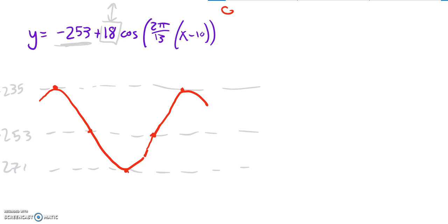So my cosine shape looks like this. I'm going to build it off of there. I know that it shifted right 10, so this point is going to be the point (10, negative 235).